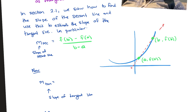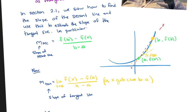To make this a slope of a tangent line instead of a secant line, we take this point b and move it closer and closer to a. Calling this point (x, f(x)), we look at f(x) minus f(a) over x minus a as x gets close to a. Now that we understand limits, we can define that more exactly: the slope of the tangent line is the limit as x approaches a of f(x) minus f(a) over x minus a.